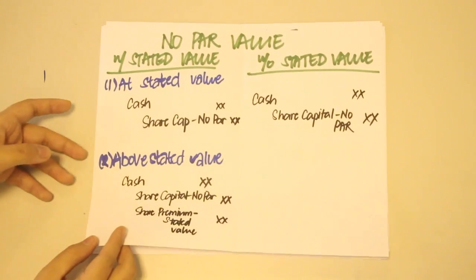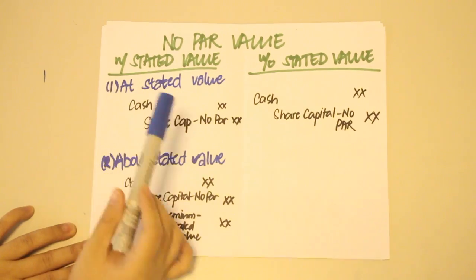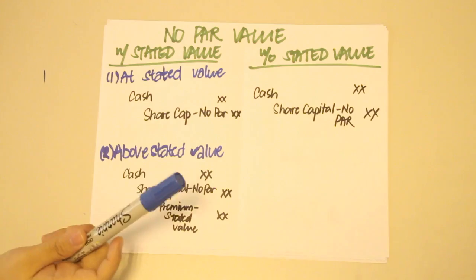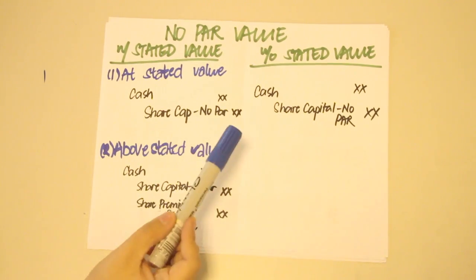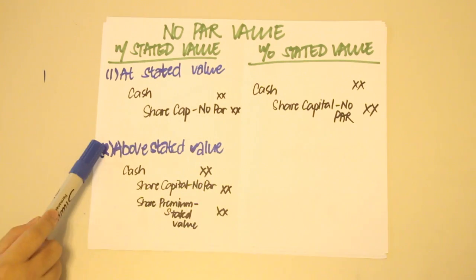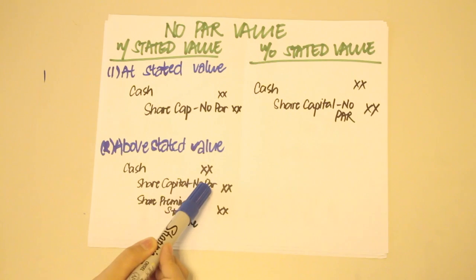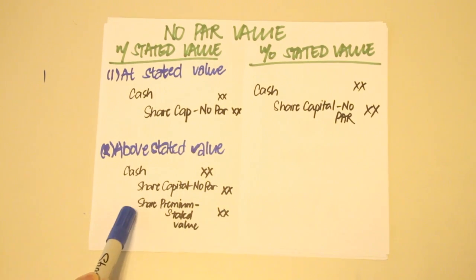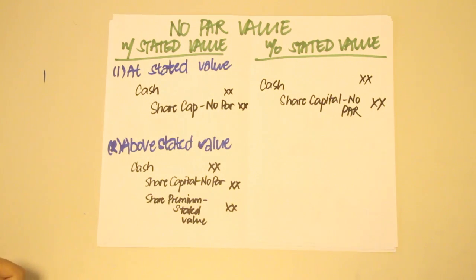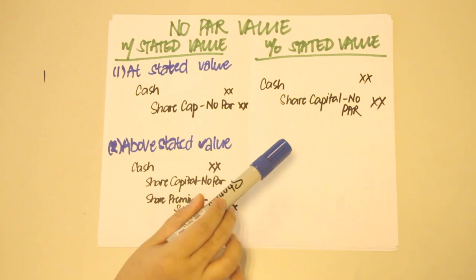Entries for no-par shares are actually very easy. For those with stated value, two scenarios may arise: first, when issued at the stated value, and second, when issued above stated value. When no-par value shares are issued at stated value, you simply debit Cash and credit Share Capital – No-Par. When issued above stated value, you debit Cash, credit Share Capital – No-Par at stated value, and credit Share Premium – Stated Value for the amount in excess. When issuing no-par value shares without stated value, you debit Cash and credit Share Capital – No-Par for the whole consideration received.